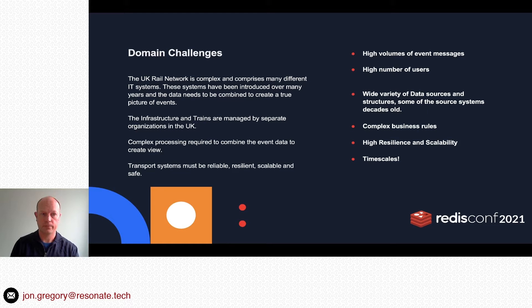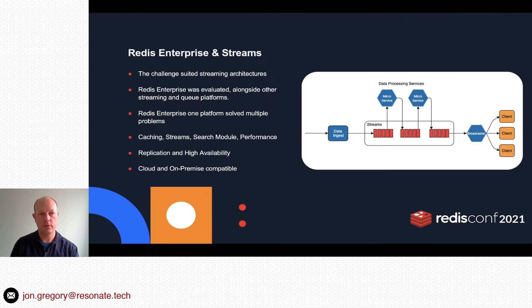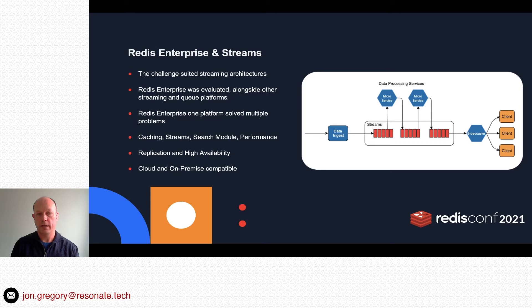Why did Resonate choose Redis Enterprise for its streaming solution? When we looked at the architecture, we could see it suited streaming architectures and event-driven processing. We evaluated Redis Enterprise alongside other streaming and queuing platforms. A key factor was that we had to run the application both on cloud and on-premise, which ruled out a lot of the cloud-native tools, making Redis Enterprise the clear front-runner.